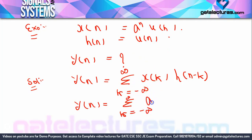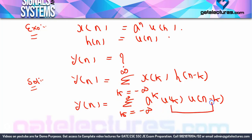Now if I look in this formula, we need xk and h(N minus k). So if I put the values of xk and h(N minus k) into the formula: xk becomes a^k · uk, and h(N minus k) becomes u(N minus k). This is our Yn equation. Now we need to solve it. In this Yn equation there are two u terms — uk and u(N minus k). If I solve these uk terms and find the summation limits, we can get the answer.